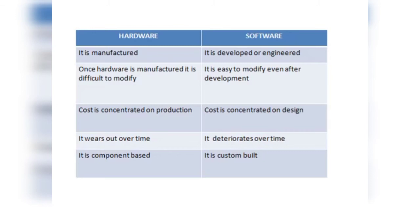Next difference: hardware समय के साथ खराब होता जाता है — hardware धीरे धीरे टूटता है, काम करना बंद करता है — this is called wear out. Software भी समय के साथ deteriorate होता है, but for software we use the term 'deterioration' instead of 'wear out.' Next, hardware is always component-based, whereas software is custom built — हम जैसे बनाना चाहें, software को उस तरह से बना सकते हैं।